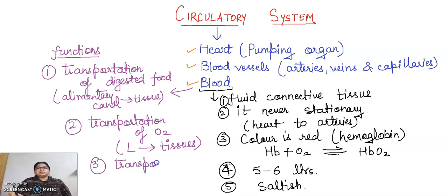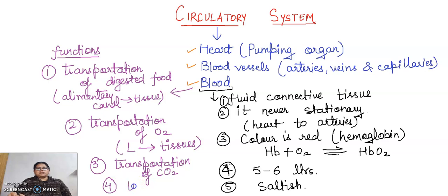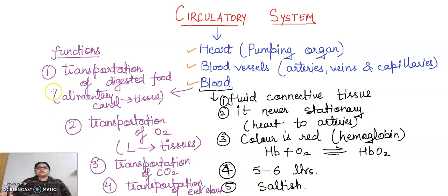Third, blood helps in the transportation of CO2 (carbon dioxide). When hemoglobin binds with carbon dioxide it forms carboamino hemoglobin. Fourth, it helps in the transportation of excretory material. Last but not the least, blood is also helpful in the distribution of hormones and in the distribution of heat.